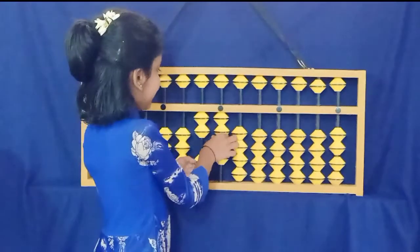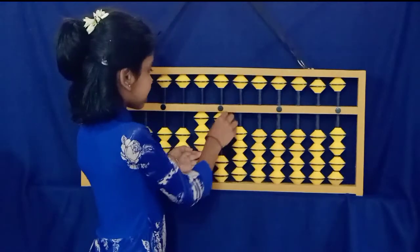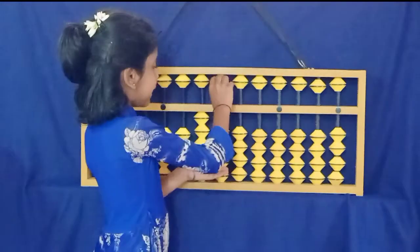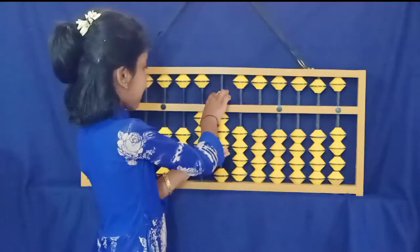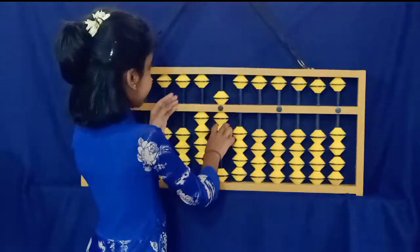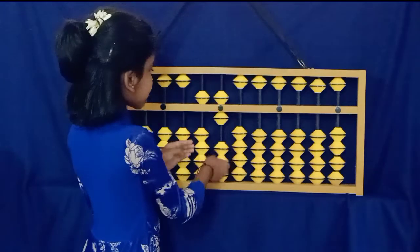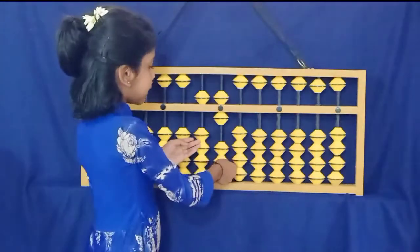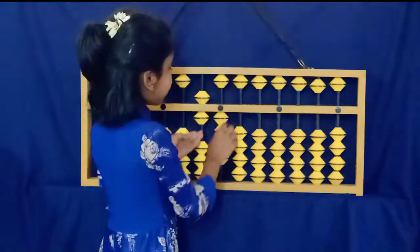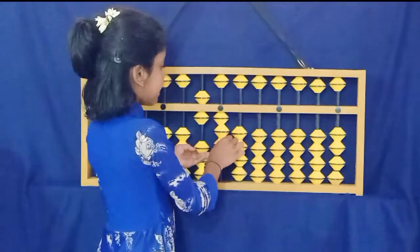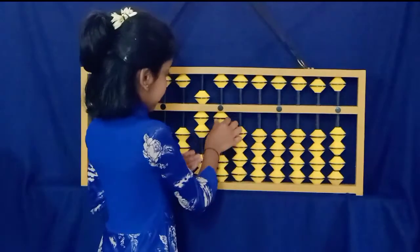8-4s are 32, 8-5s are 40, 8-6s are 48, 8-7s are 56, 8-8s are 64, 8-9s are 72, 8-10s are 80.